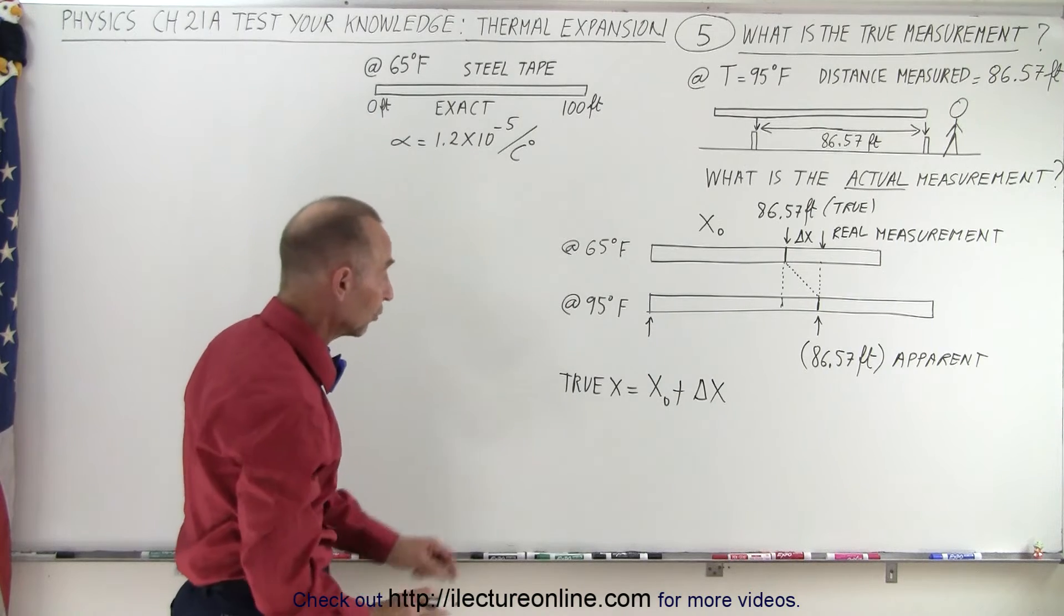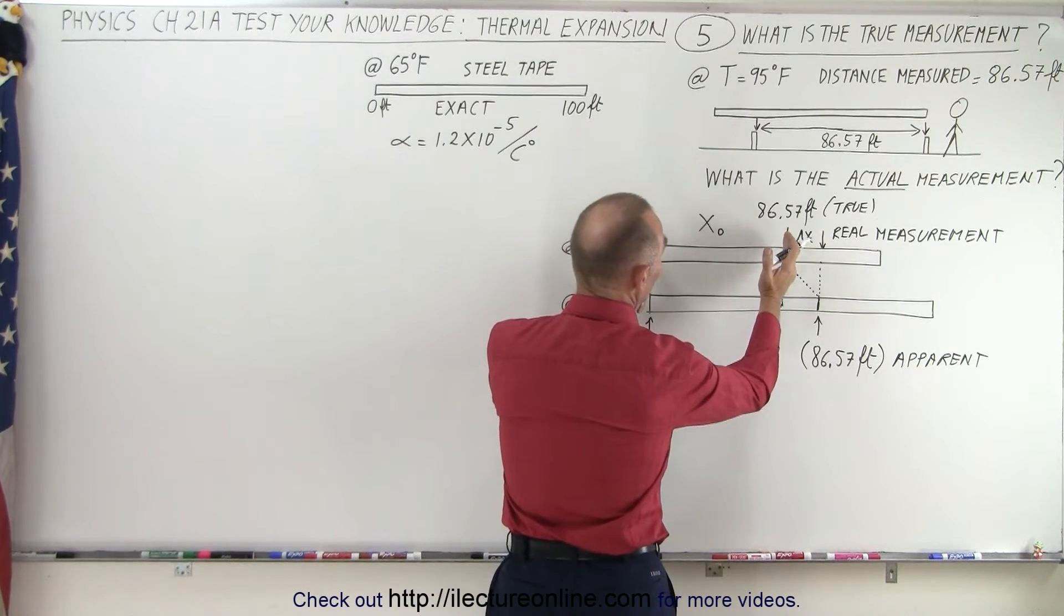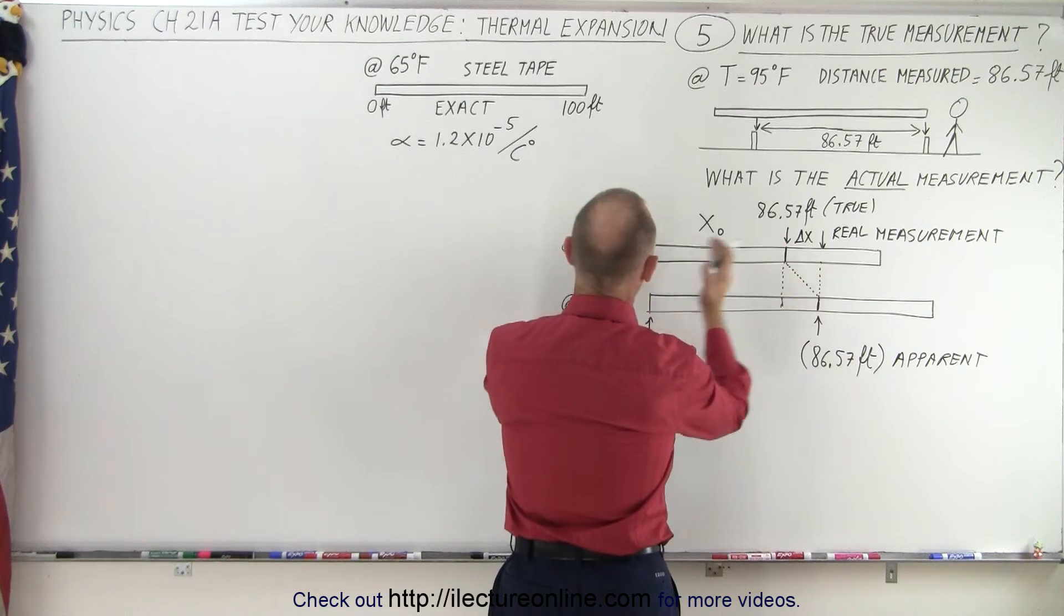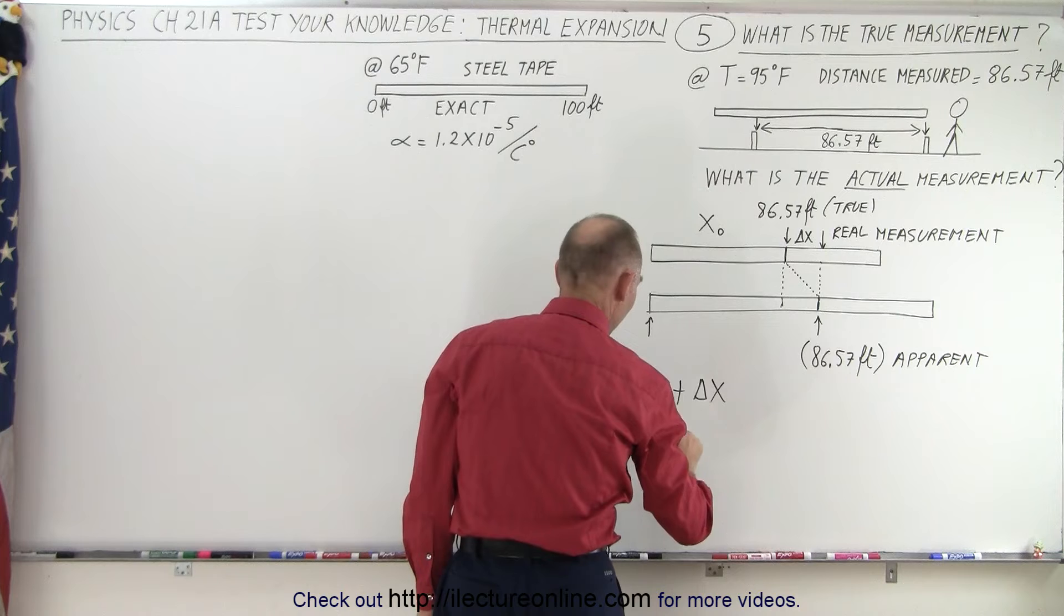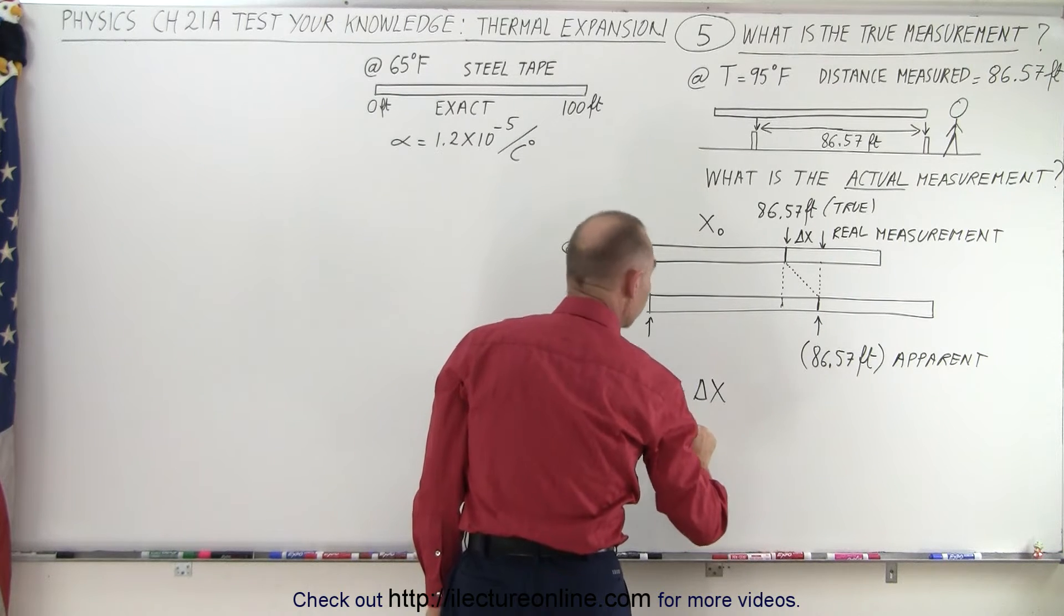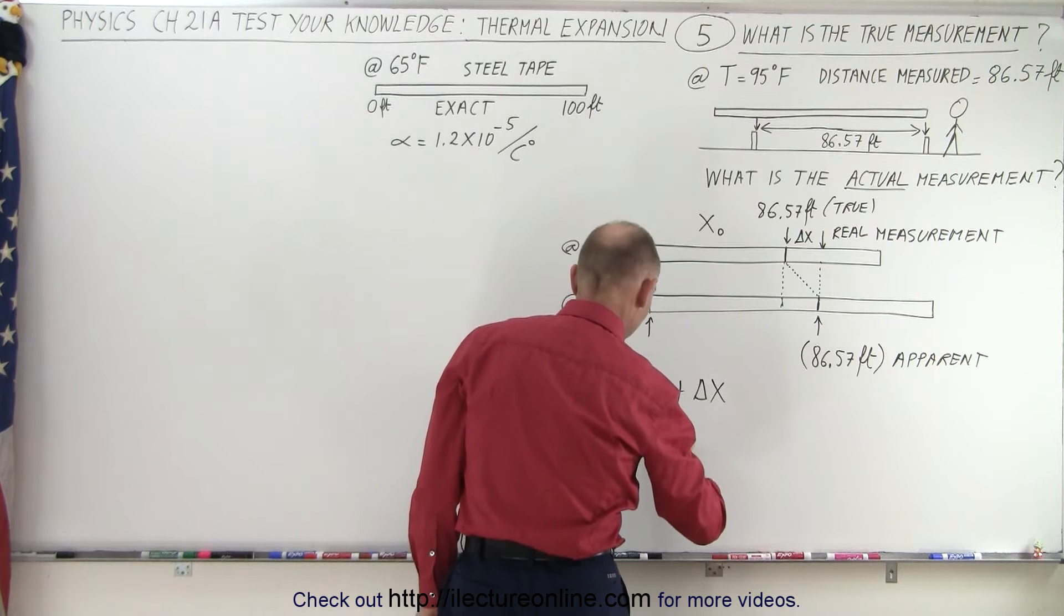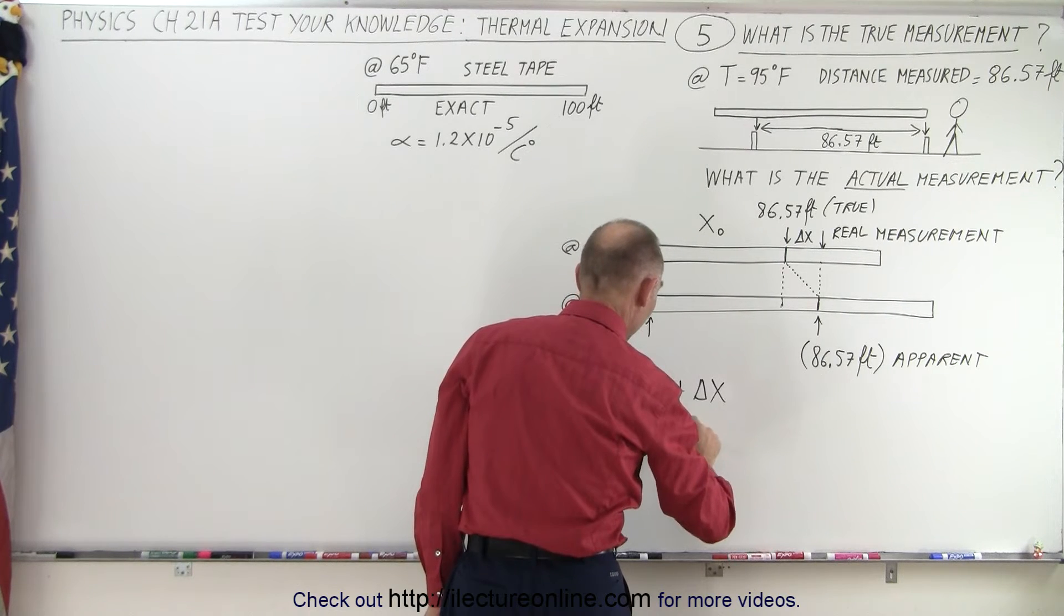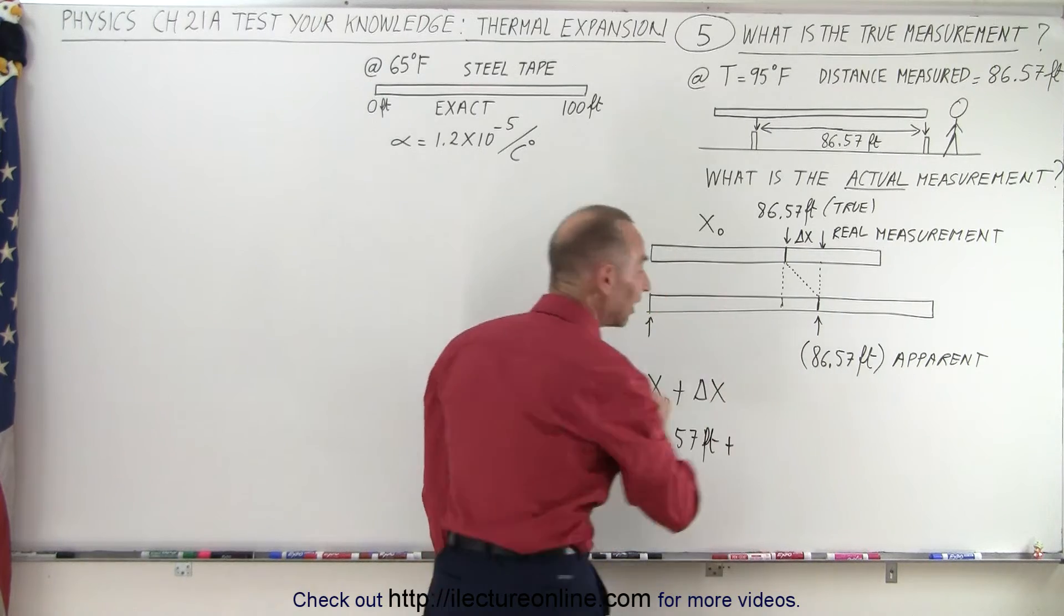Now let's find out what those are. The x sub naught we now established will be exactly 86.57 feet when the tape goes back down to 65 degrees. So this would be 86.57 feet, plus the delta x.